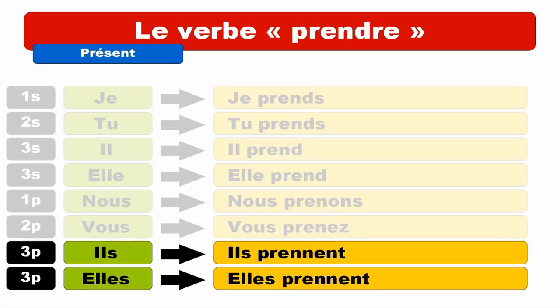Keep in mind that as usual for the third person of the plural, the final ENT is not pronounced. For ELLES — ELLES PRENNENT. Repeat. ELLES PRENNENT. So let's see one more time: JE PRENDS, TU PRENDS, IL PREND, ELLE PREND, NOUS PRENONS, VOUS PRENEZ, ILS PRENNENT, ELLES PRENNENT.